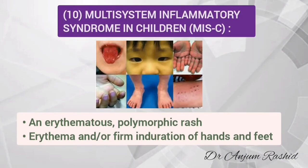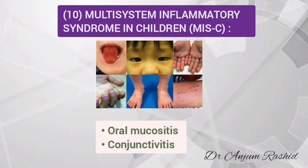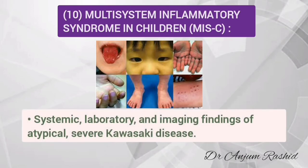Another skin rash is part of a multi-system inflammatory syndrome in children (MIS-C), which may be present in some cases of COVID. It is an erythematous polymorphic rash associated with erythema or firm induration of the hands and feet. There is also oral mucositis and conjunctivitis. Systemic, laboratory, and imaging findings of atypical severe Kawasaki disease are present in this syndrome.